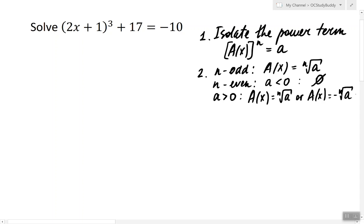So let's get started. First step is to isolate the power term that means we subtract 17 from both sides. So the power term is now isolated and it's equal to negative 27.